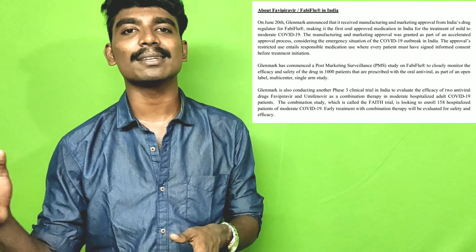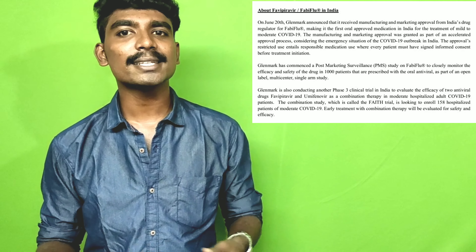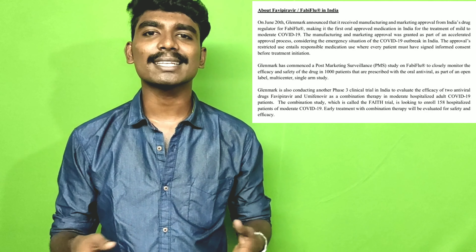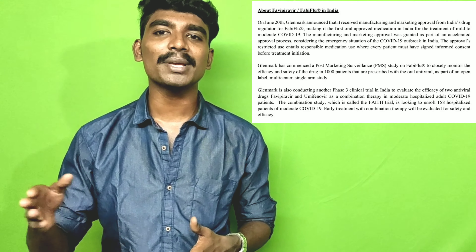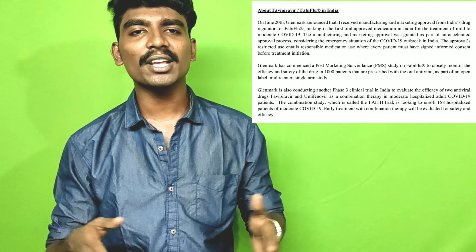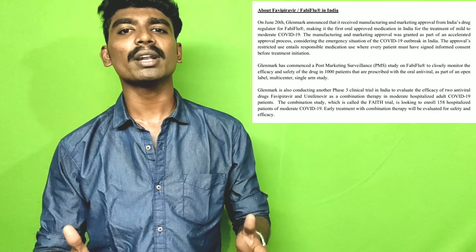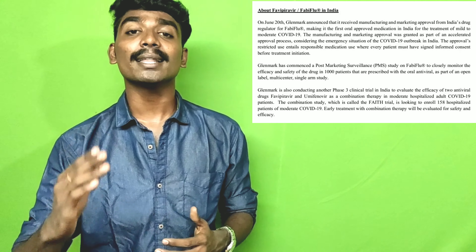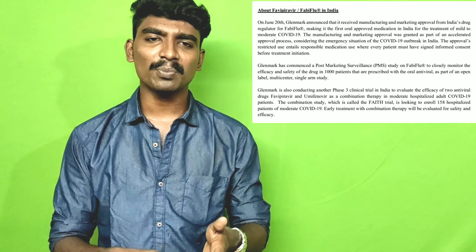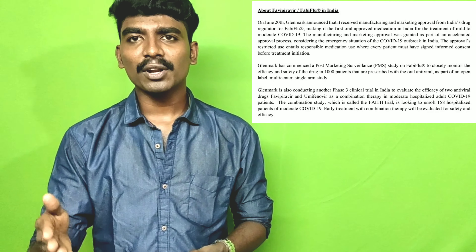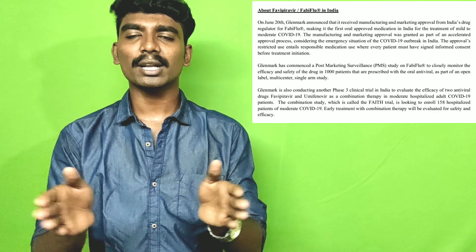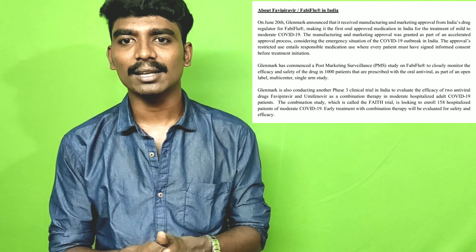Now we discuss the mechanism of Favipiravir. The mechanism of its action is thought to be related to the selective inhibition of viral RNA-dependent RNA polymerase. Favipiravir is a prodrug that is metabolized to its active form, Favipiravir-ribofuranosyl triphosphate. It is available in both oral and intravenous formulations. The main mechanism is to inhibit RNA-dependent RNA polymerase.